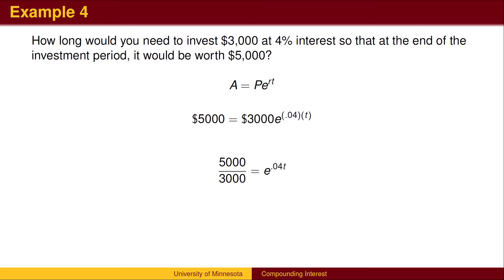Divide by 3,000. Rewrite in logarithmic form. .04t is the exponent you put on e to get 5 thirds. Evaluating the log and dividing by .04 gives t equals 12.77 years.